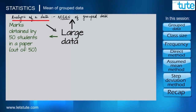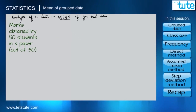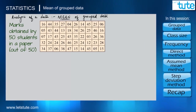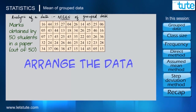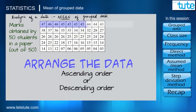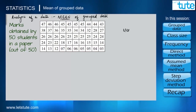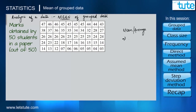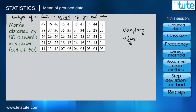The data consists of marks secured by 50 students in one paper out of 50 marks, arranged according to roll numbers. The first thing we need to do is arrange the data properly so it is readable, keeping top scorers first and going down to lower scores. To find the mean of this data, the conventional method is to take the sum and divide by the total number of data points.